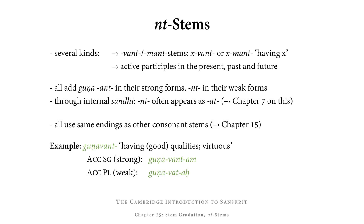All NT stems use the same endings as other consonant stems — the ones introduced in Chapter 15. This means we don't need to memorize any new endings here, but we still need to look at stems separately because of their internal sandhi and also in order to familiarize ourselves with stem gradation.